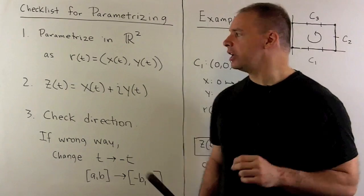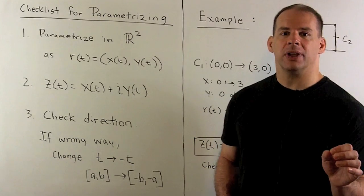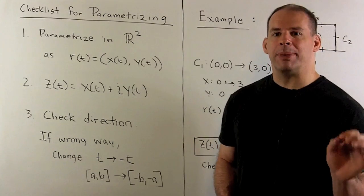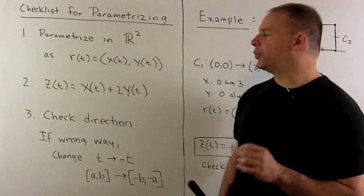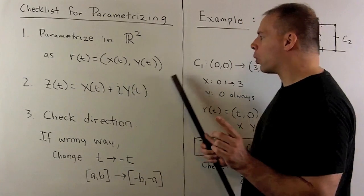r of t, where t is going to be a real number. When I fix a t, it's going to give me back a point in the plane. So that means we have two functions, x of t and y of t, that represent our coordinates.